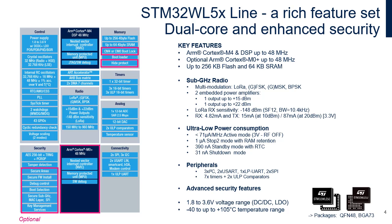The STM32WL5 product line comes with a dual-core architecture made of an ARM Cortex-M4 core, a Cortex-M0+, and advanced security features. As you will see in subsequent training modules, the STM32WL series is also available through the STM32WLE product line, which is a single-core product based on ARM Cortex-M4 only.